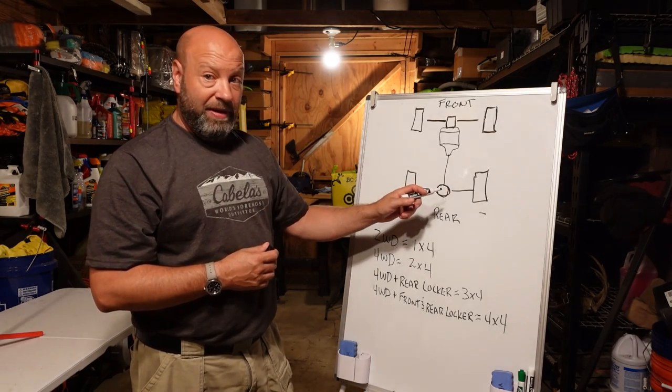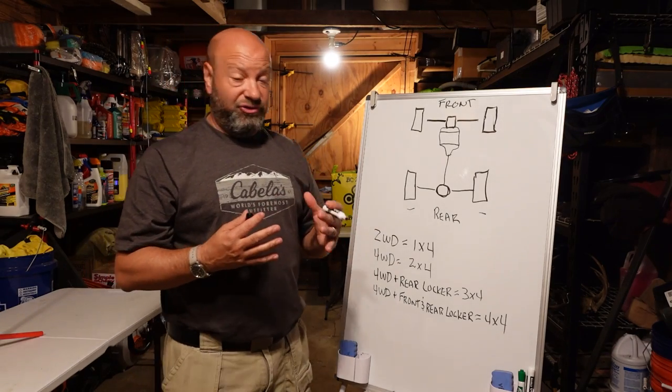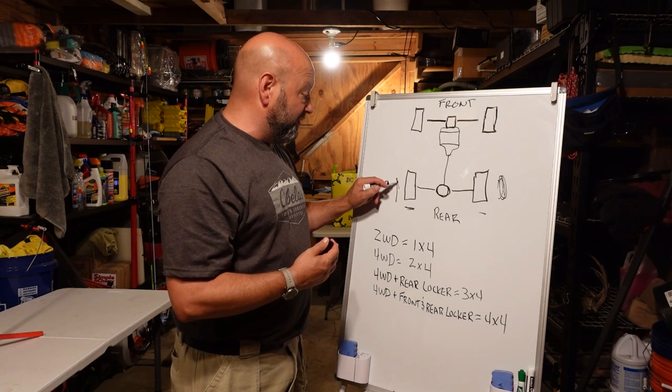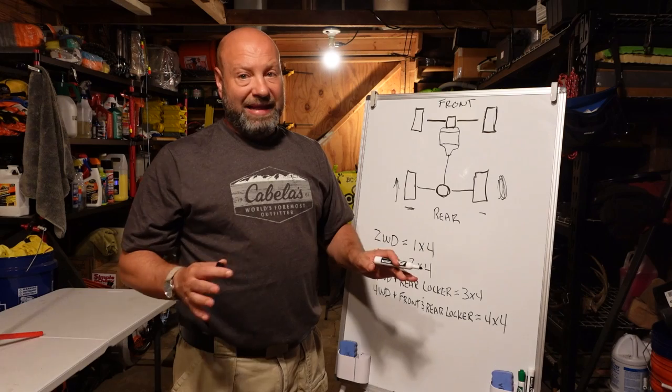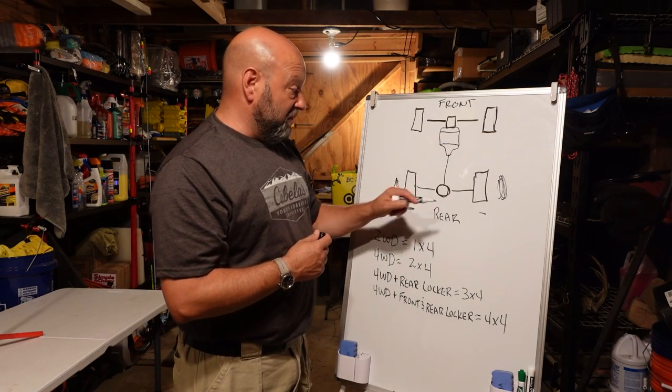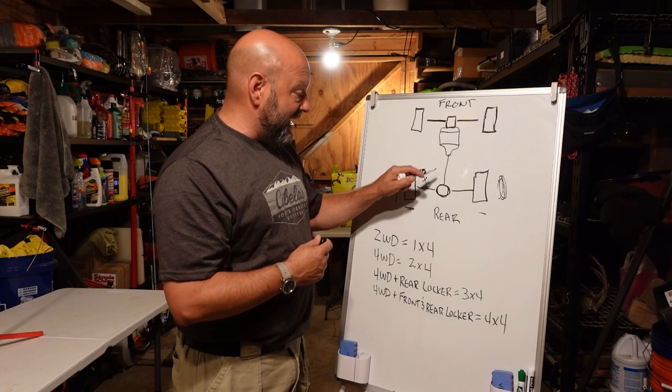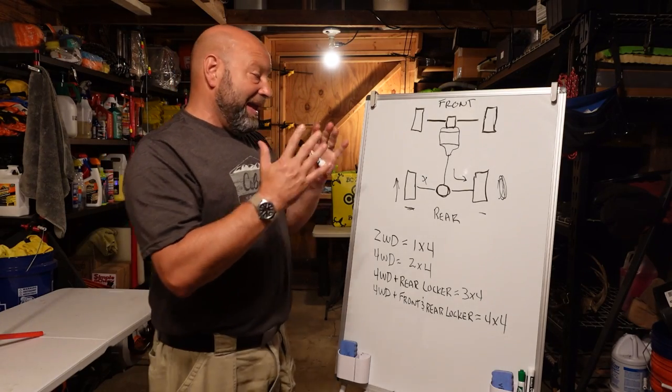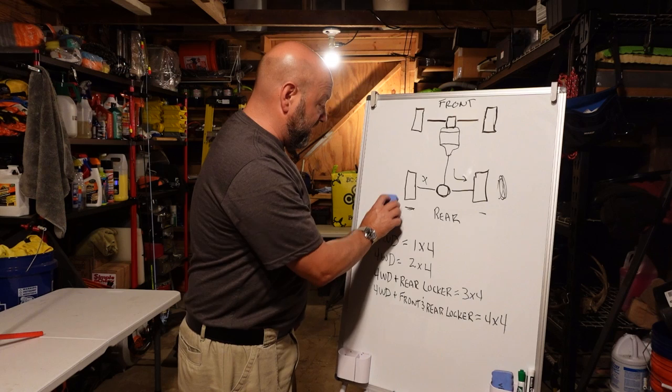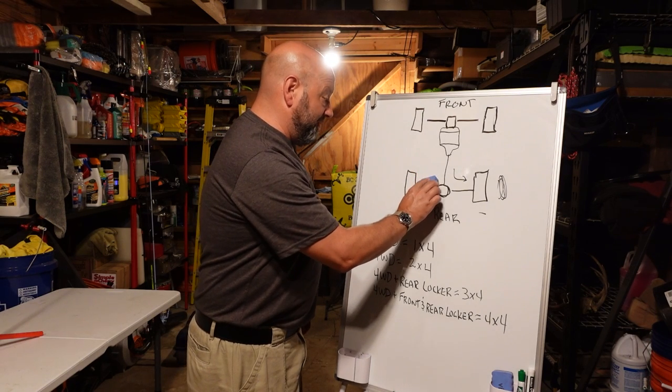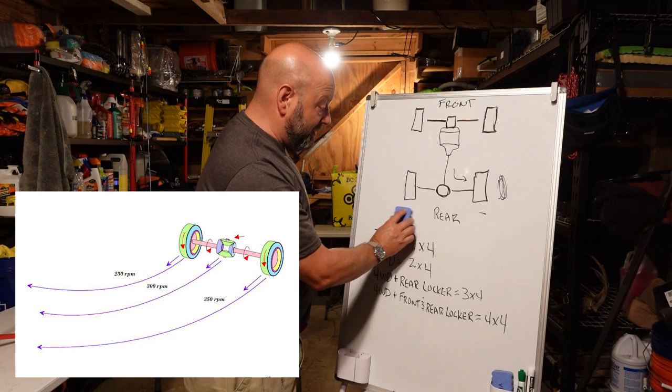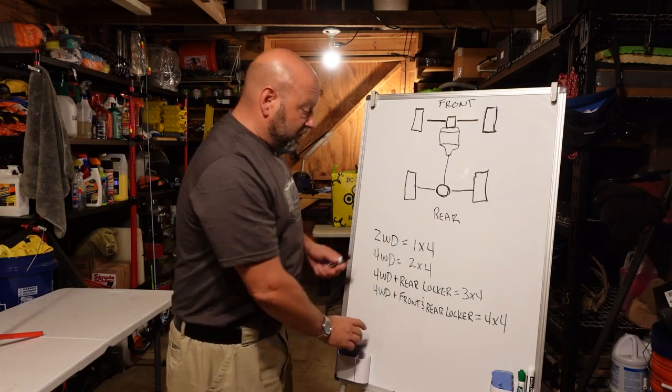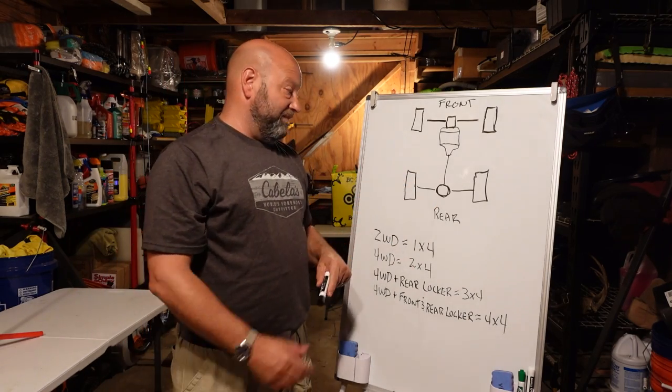Whichever one breaks free is the one that gets the power. And that's not the way you'd think it should be. You would think if this one starts slipping, this one would kick in and propel you forward. Not the case because of the open differential system. As soon as this one slips, all that power, this one becomes static. Power gets diverted to that one and they just sit there and spin.